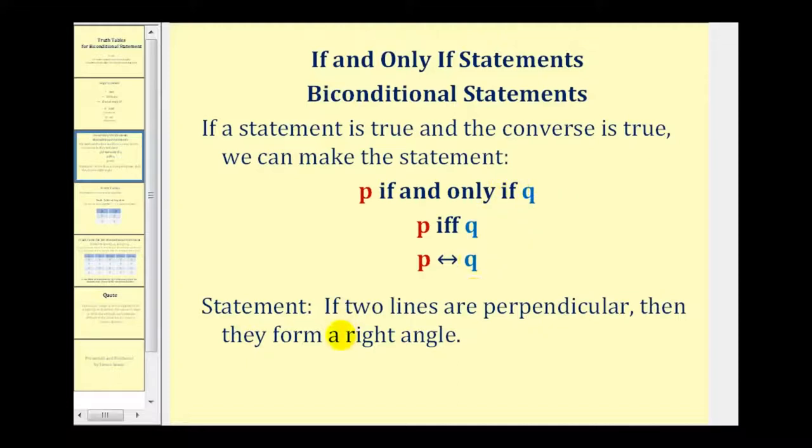An example of this would be if two lines are perpendicular, then they form a right angle, which is true. And if this is in the form if P then Q, if Q then P would be if two lines form a right angle, then the lines are perpendicular, which is also true. So this would be an example of an if and only if statement. So we could state that two lines are perpendicular if and only if they form a right angle.